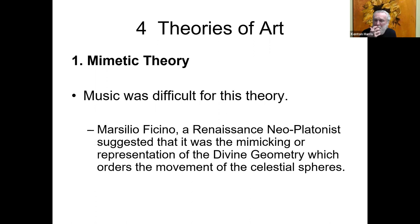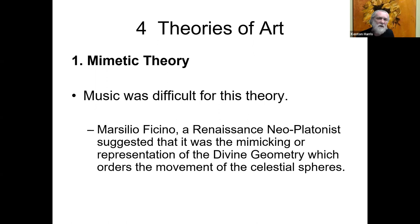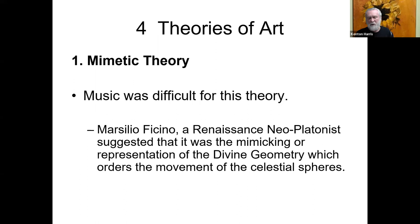In the Renaissance, Marsilio Ficino, a Neoplatonist, suggested that just as there is a divine geometry explaining the ordering of the celestial bodies, so too music appeals to this kind of geometric pattern. It was long understood that there is a geometric pattern to the creation of music — the relations of chords, fifths, octaves, and thirds. So he was thinking that maybe it's an imitation of this divine geometry. But again, it wasn't a very easy fit.